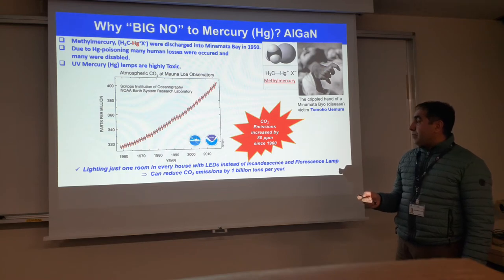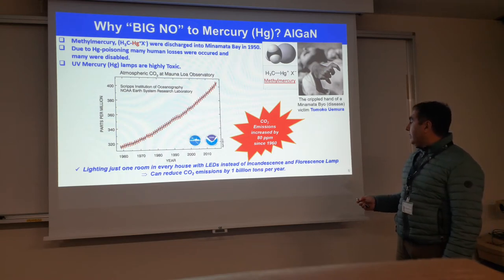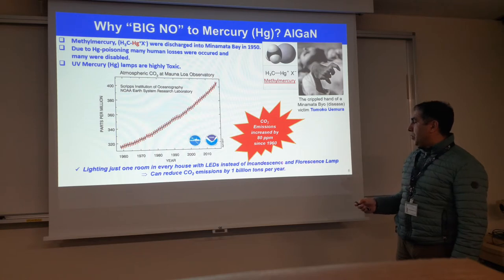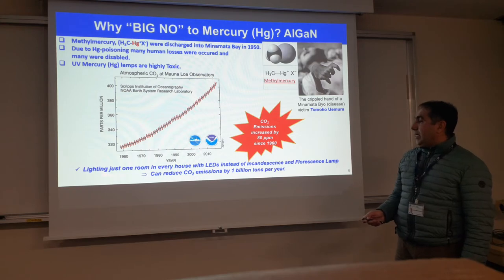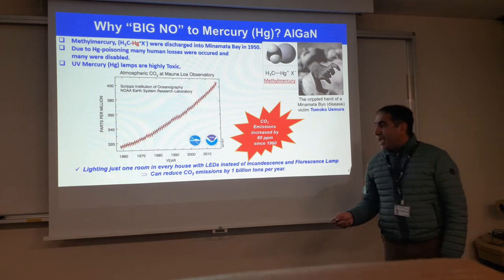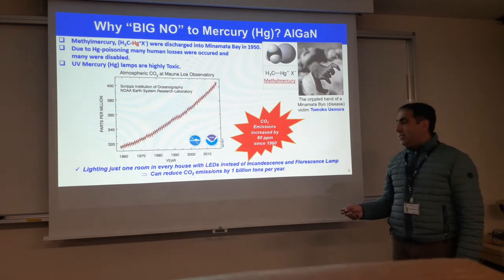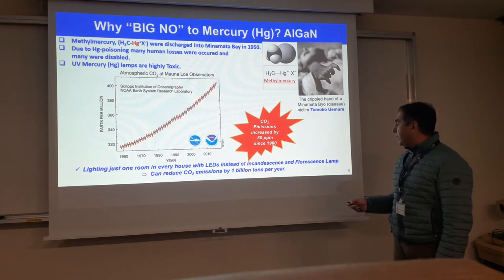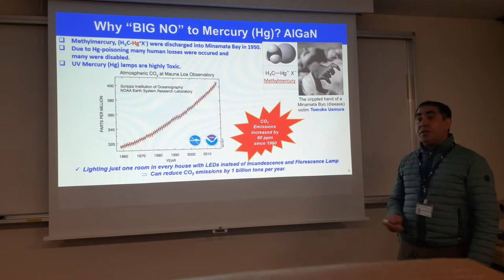By using incandescent and fluorescence lamps, we increase CO2 emission. For instance, lighting just one room in every house with LEDs instead of incandescent and fluorescence lamps, CO2 emission can be reduced by one billion tons per year.